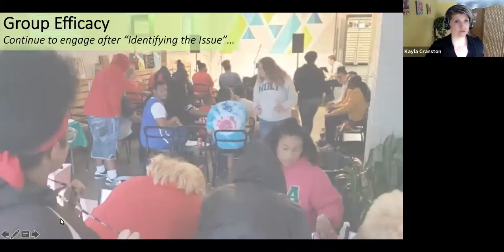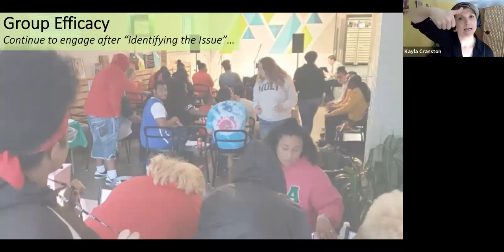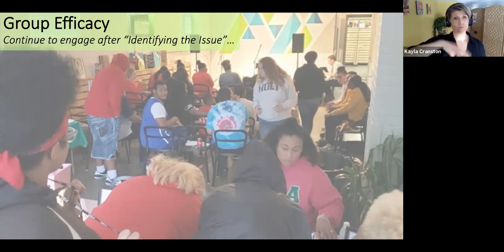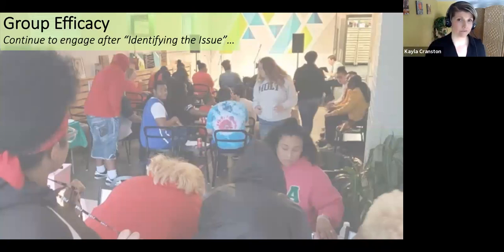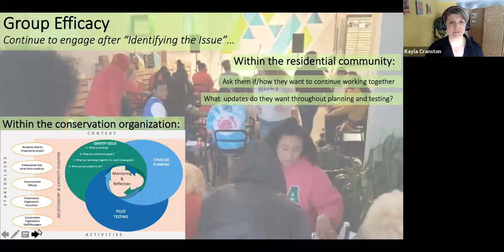The last thing we'll talk about today is group efficacy — continuing to engage after the 'identify the issue' phase. Group efficacy is essentially saying: I might have effective autonomy, I might have my self-regulated understanding, I might know my community is demanding this stuff, and I might find it meaningful personally or professionally. But as a group, if I don't feel like I'm an effective part of a larger group that is working effectively, then I am less likely to continue working with that group over time.